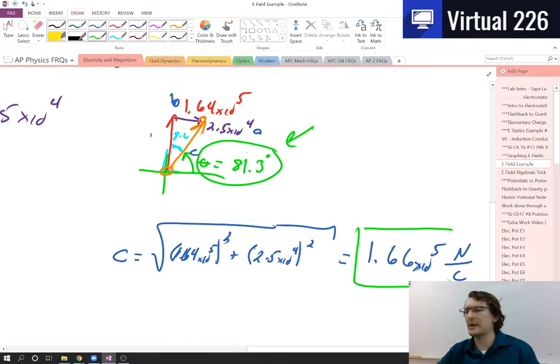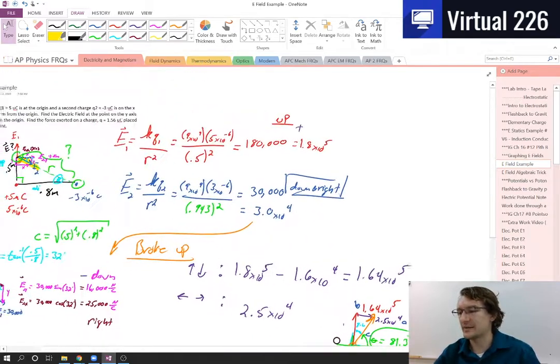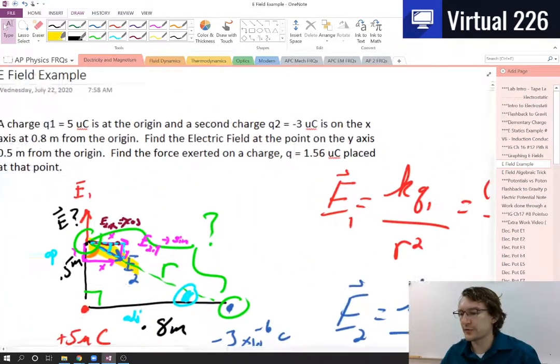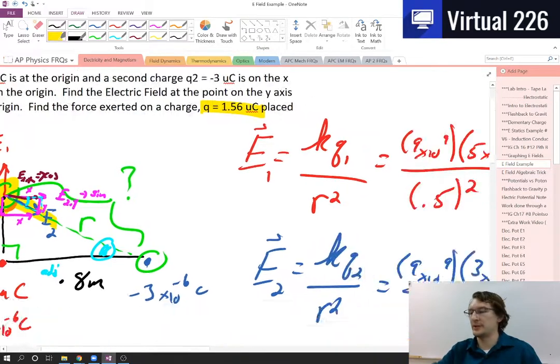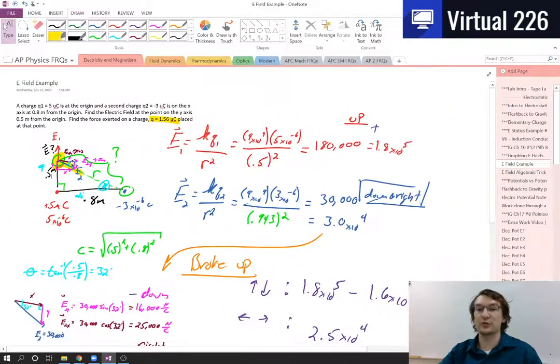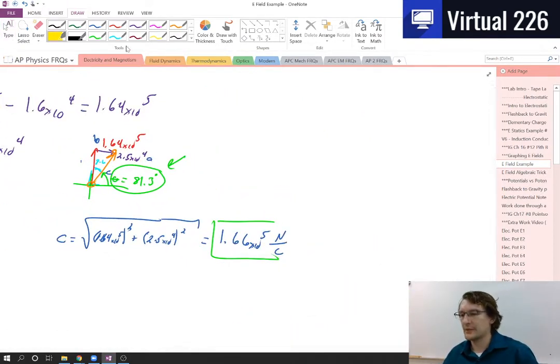Now the second part of this problem, there's a second part, yeah, you forgot about it. The second part of this problem was, what's the force exerted on a charge, 1.56 microcoulombs, placed at that point? So a charge placed right here, what's the force on it? Ah, snap, we've got to do a force problem now. Ugh, not so fast. This is easy.